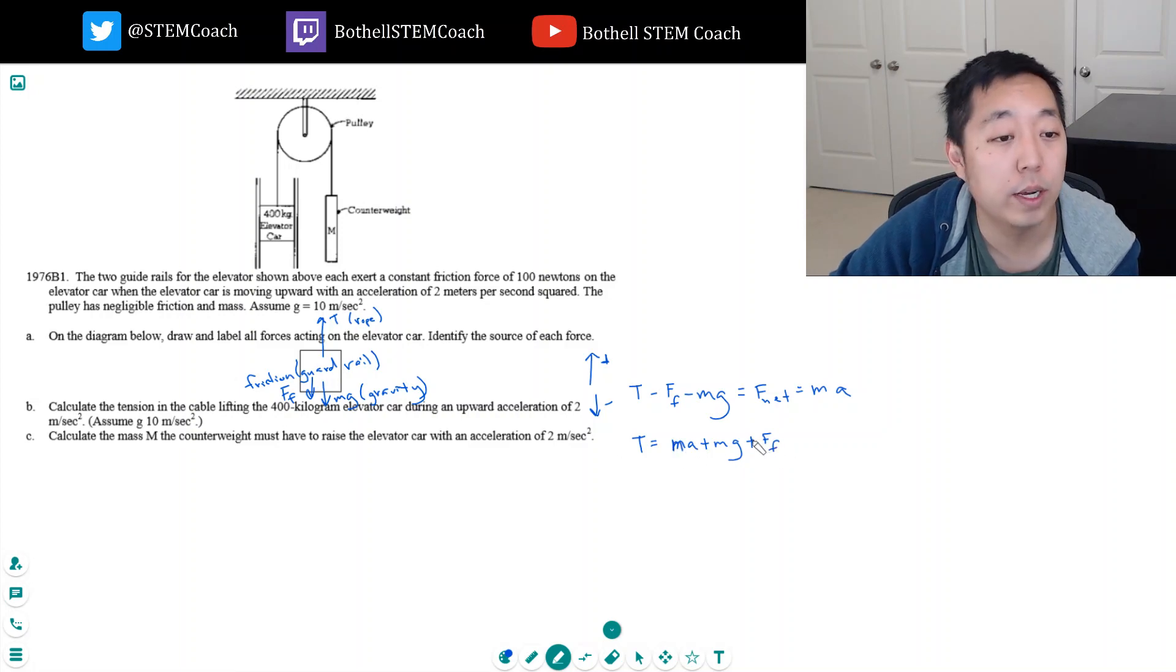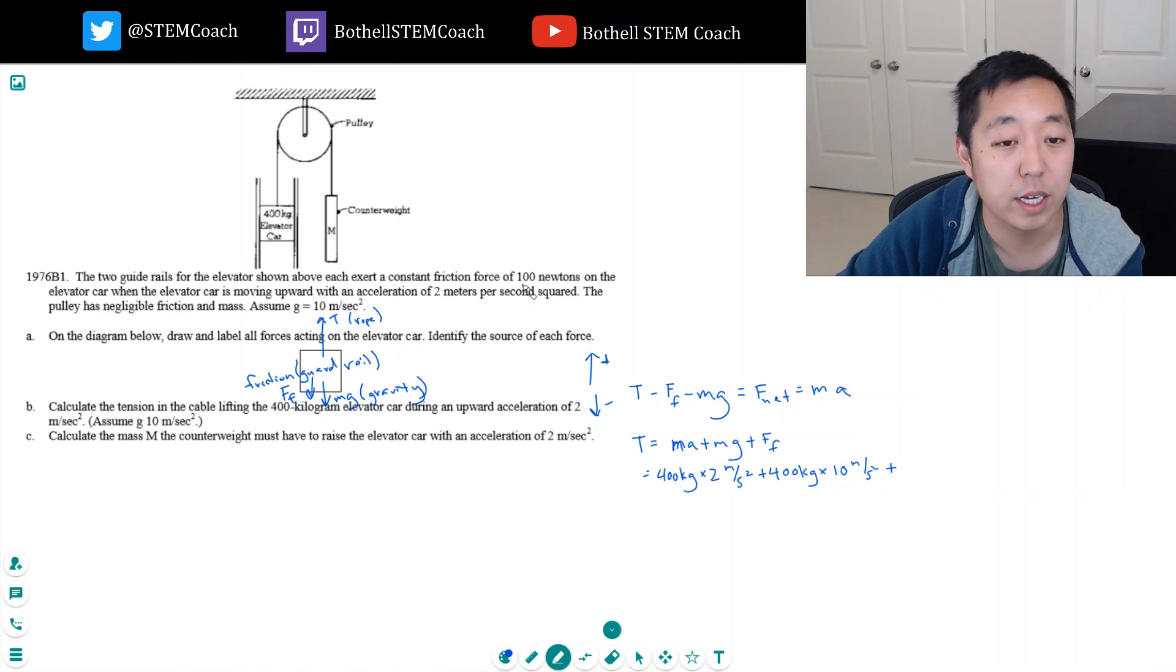Now what do I know? I know the thing is 400 kilograms. The acceleration is 2 meters per second squared plus mg, which is 400 kilograms times 10 meters per second squared, plus the force of friction which they tell us is 100 newtons. So the tension is equal to the sum of these: 800 plus 4000 is 4800, plus 100 is 4900 newtons.